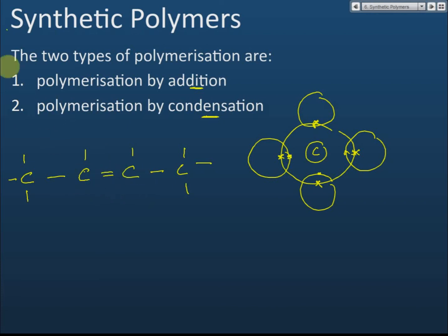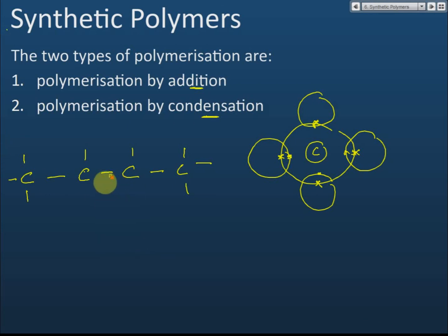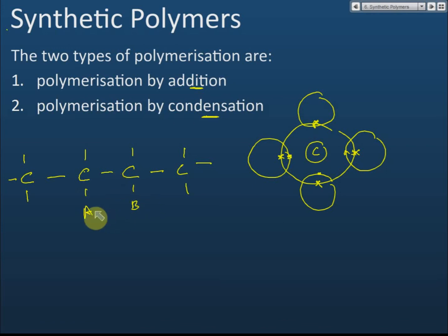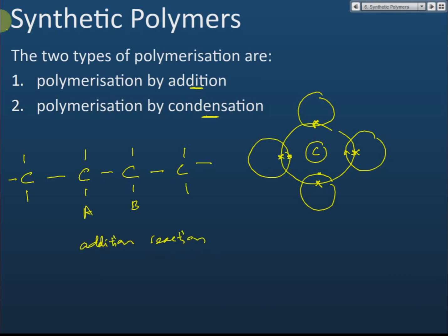If there is a double bond between carbon atoms, we can add something into it. For example, if we add A and B into the double bond, the double bond disappears — it is broken — and A and B become attached to those two carbon atoms.